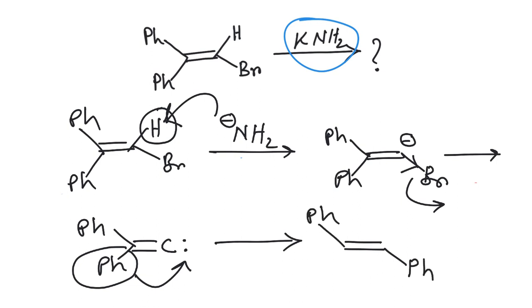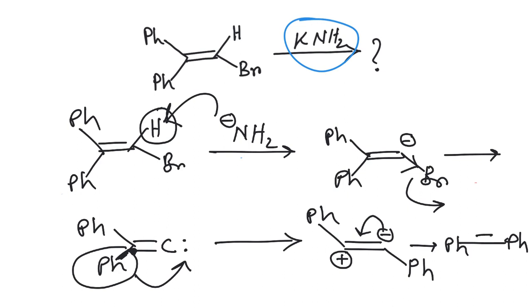Because migration is occurring from one side, a positive charge develops there, and since the phenyl migrates with the bond electrons, a negative charge appears on the other carbon. This positive and negative then recombine to give you this alkyne. So this is the correct answer.